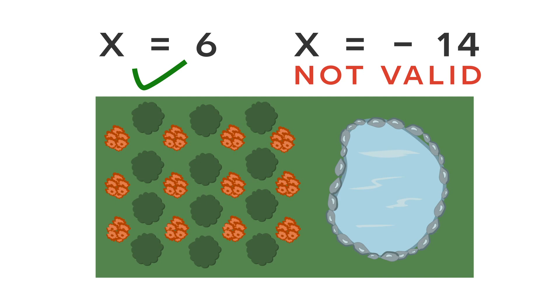So now we know that the width x is equal to six feet, which means that the length of the rectangle must be equal to 14 feet because the length must be eight feet longer than the width.